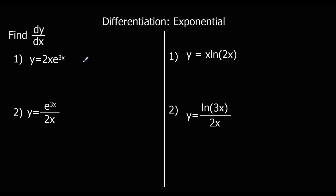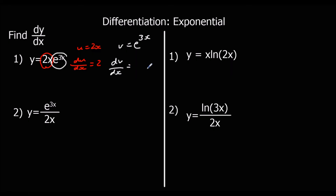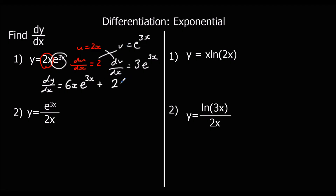Question 1 is a product rule question — two functions multiplied together. Let u equals 2x, so du/dx is 2. And v equals e to the power of 3x, so dv/dx is 3e^(3x) — keep it the same and multiply by the bracket differentiated. Substituting into the product rule: u·dv/dx gives 3 times 2x equals 6x, so we get 6x·e^(3x). Plus v·du/dx, which is 2e^(3x).